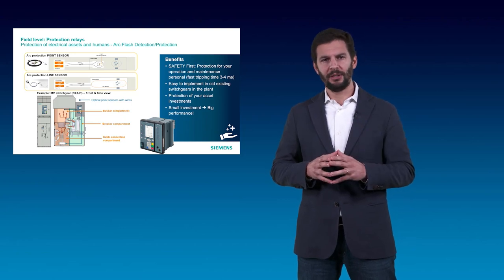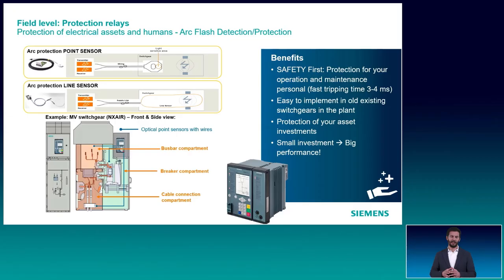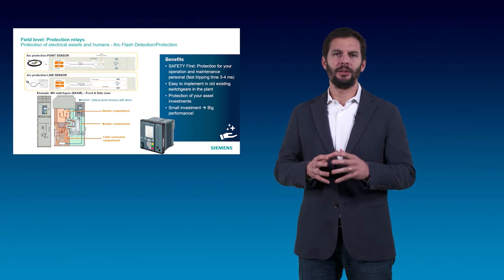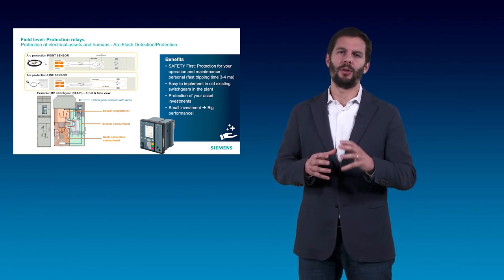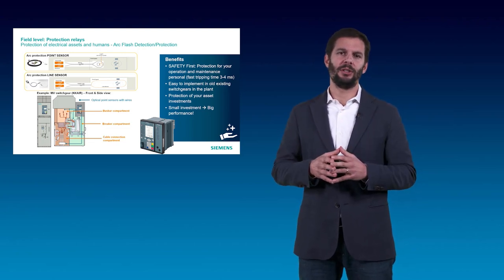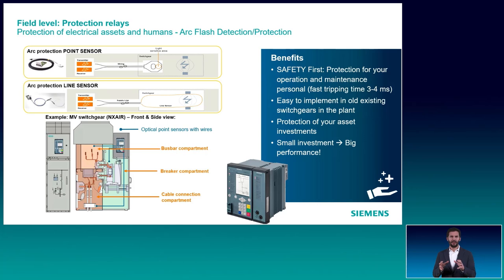Still on the topic of safety, if we look into an industrial plant, we will see a considerable number of medium-voltage switch gears. Having this primary equipment around also brings additional risks, first of all to the persons who have to operate them. In order to avoid that, we have arc flash detection. In one model of the protection relay, Cyprotec 5, we can connect three point or line sensors, and in one device we can have up to five modules — meaning a total of 15 sensors can be connected, sensing the different switch gear compartments: the bus bar, breaker, or cable connection compartment. The protection itself is very fast, clearing a fault in three to four milliseconds.